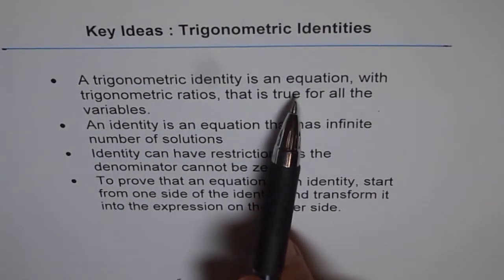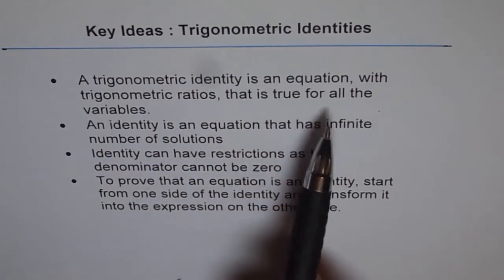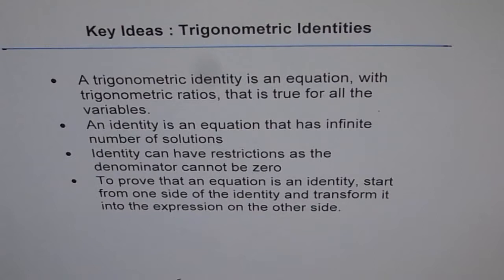A trigonometric identity is an equation with trigonometric ratios that is true for all the variables. That is kind of very important, and that is also a difference between identity and an equation, whether it is trigonometric or algebraic or any identity or an equation.